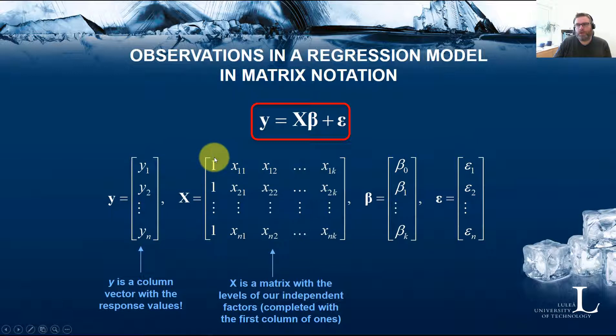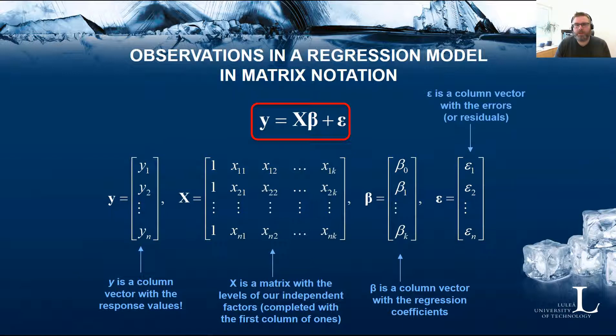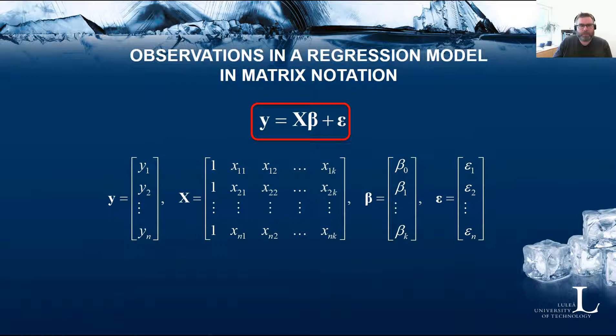Additionally, the first column with only 1s is part of it because we want to make sure that every observation has beta 0 as part of it, times 1. Beta is a column vector with the regression coefficients. And then we have a column vector with the errors or the residuals. Just to take a look at the first observation y1, we get this from multiplying beta 0 with 1, beta 1 times x11, and so on. Beta k times x1k plus epsilon 1. This is how we create every response value in this design.